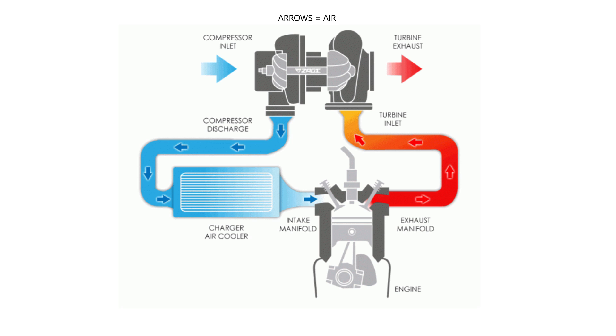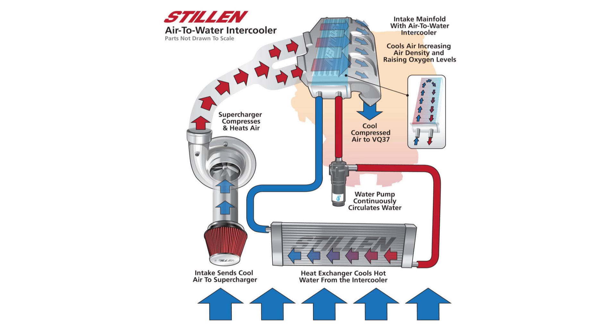Speaking of intercoolers, air-to-air intercoolers are the most common — often mounted on the front of the vehicle and known as a front mount intercooler or FMIC. However, one thing that's becoming a lot more popular nowadays is an air-to-water intercooler. Unlike an air-to-air intercooler, which relies on air to cool the charge air, an air-to-water intercooler is almost like a separate cooling system — it relies on a water and coolant mixture to actually cool the charge air. These air-to-water intercoolers are becoming more popular on factory turbocharged and forced induction cars because a water and coolant mixture has a much greater heat-carrying capacity than air does, which can help prevent heat soak.